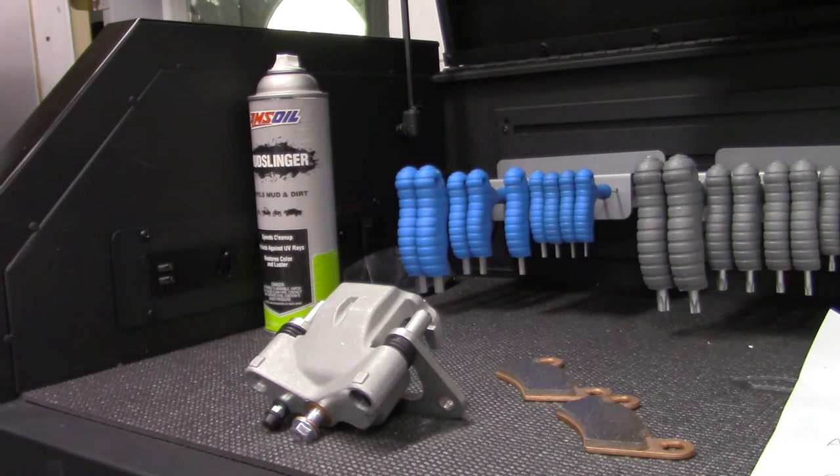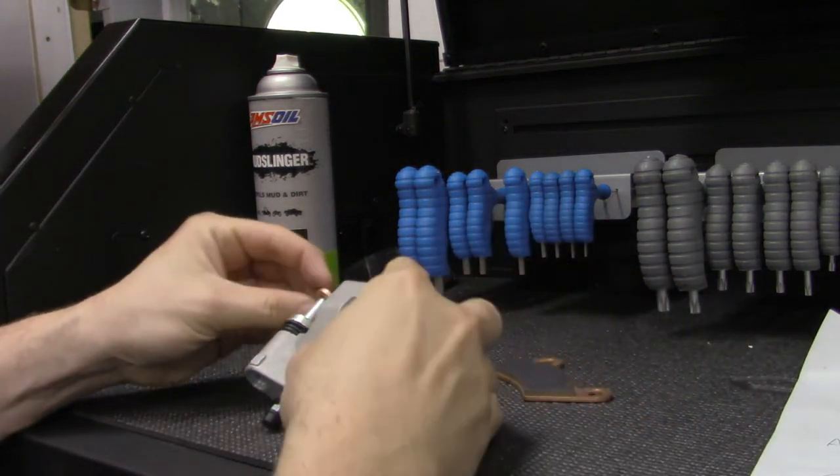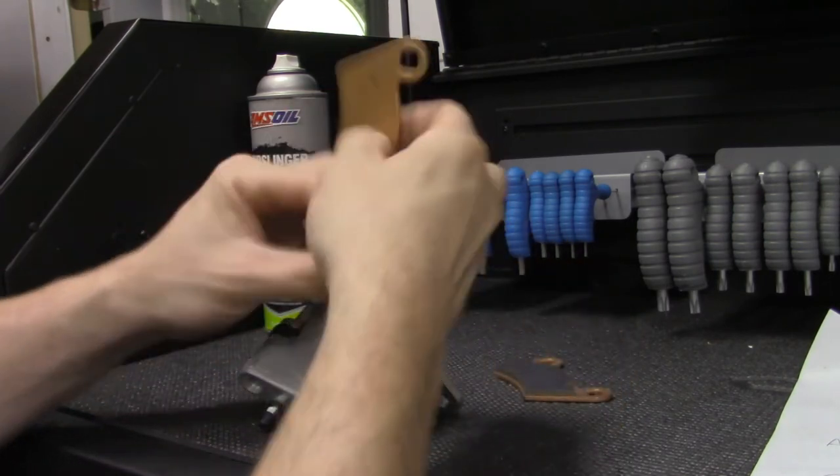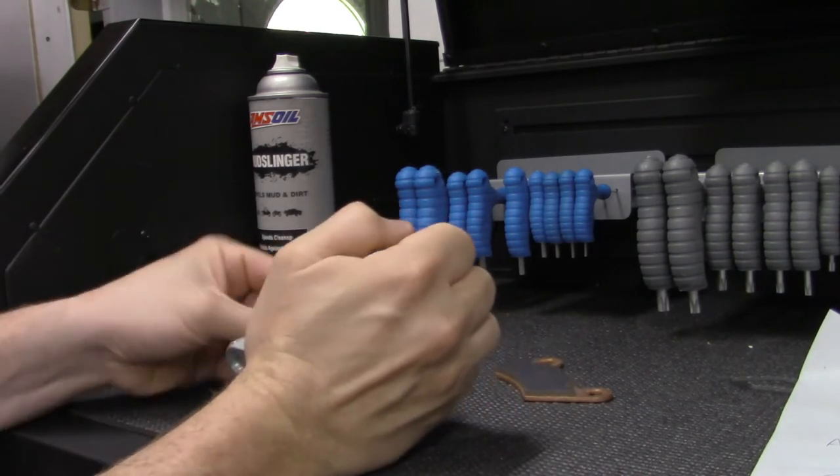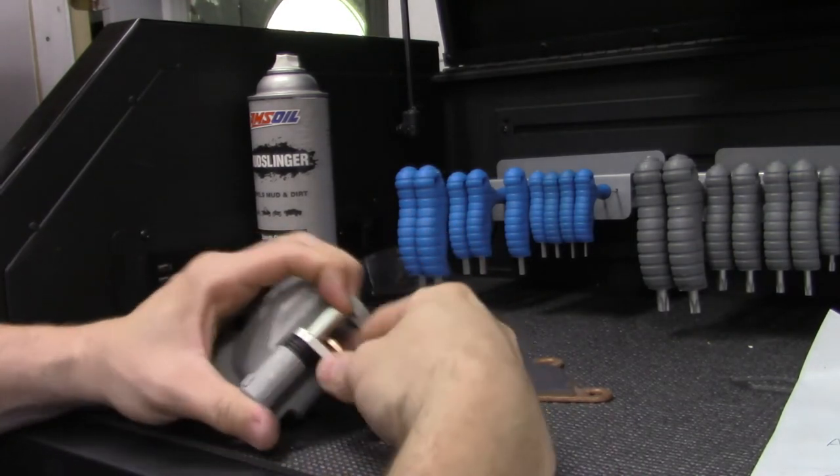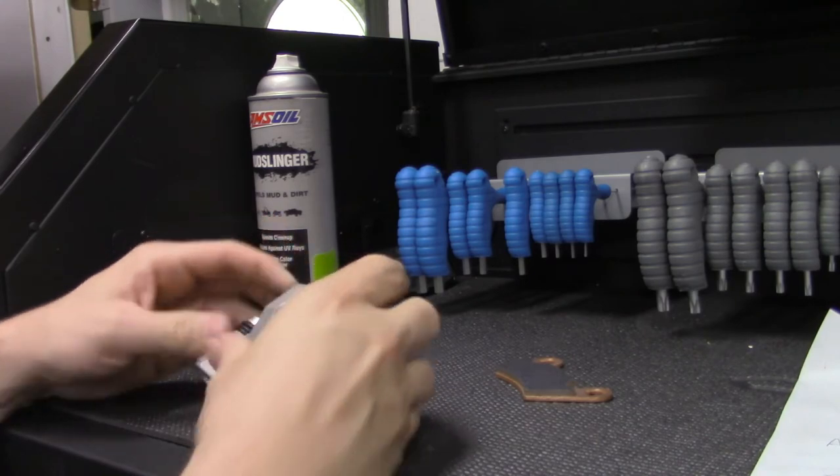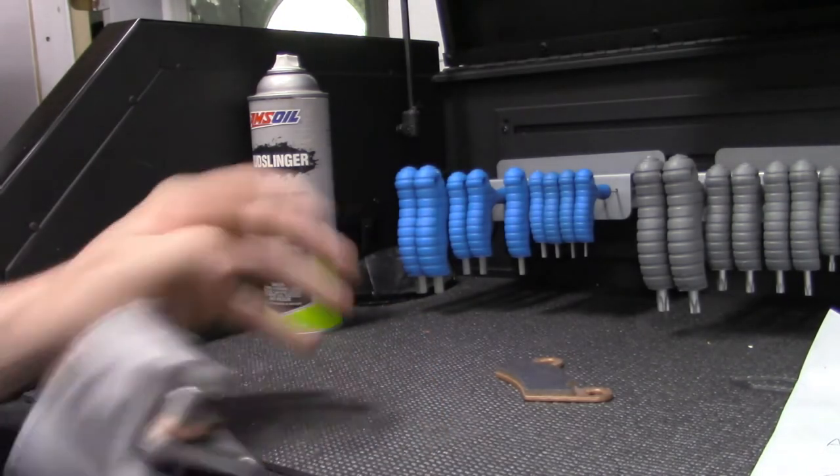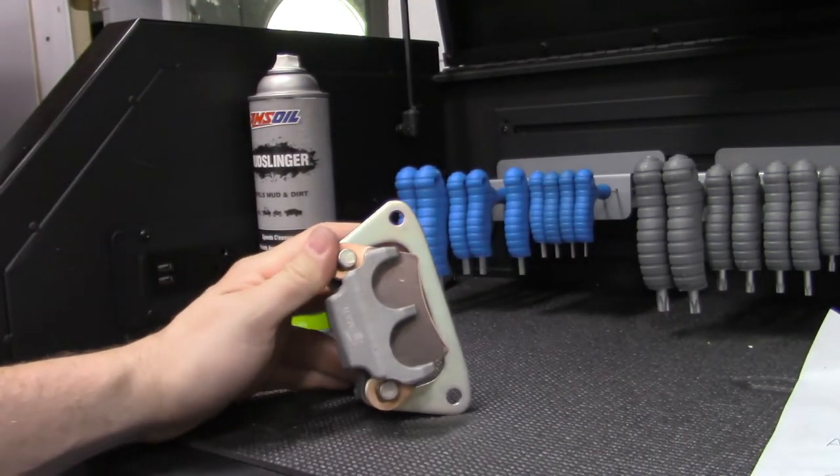They look pretty close to the same. Okay, so what we're going to do now is we're actually going to reinstall the pads. It's real simple, it's just like taking them off - we're just going to put them on the same way they come off. That's going to be our back pad like so, and then we will put our front pad on. There we go, like so.